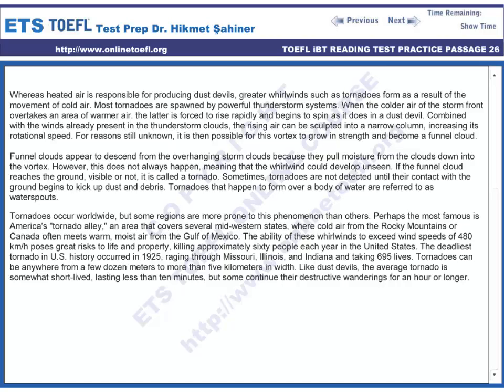Tornadoes kill approximately 60 people each year in the United States. The deadliest tornado in U.S. history occurred in 1925, raging through Missouri, Illinois, and Indiana, and taking 695 lives. Tornadoes can be anywhere from a few dozen metres to more than 5 km in width. Like dust devils, the average tornado is somewhat short-lived, lasting less than 10 minutes, but some continue their destructive wanderings for an hour or longer.